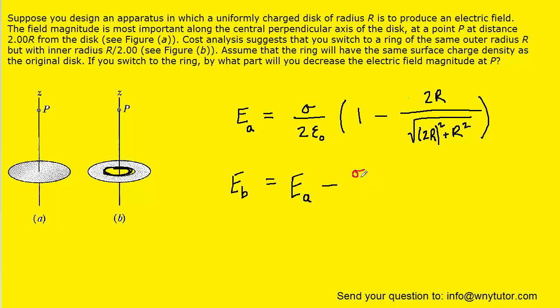So the electric field produced by that missing piece so to speak would be the same expression. It would be the sigma over 2 epsilon multiplied by 1 minus whatever the Z distance is. Again that distance is 2R. We'll divide that by the square root of 2R squared plus the radius of that disk. Now the question notes that that radius would be R divided by 2. So we're going to plug that in right here. And then not forget to square it.